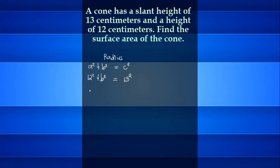12 squared is equal to 144 plus b squared equal 13 squared is equal to 169. So, b squared is equal to 169 minus 144 equal 25. Get the square root of 25 in order to get the radius. So, b is equal to 5. Our b is equal to 5, 5 cm.